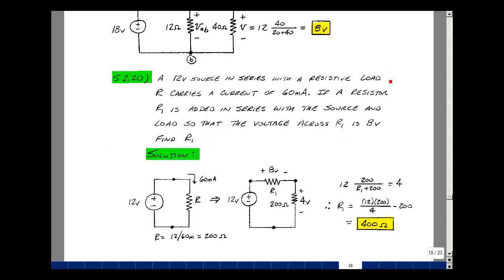Let's take this word description and express it as a schematic. Here we have 12 volts and a resistor R carrying a current of 60 milliamps.